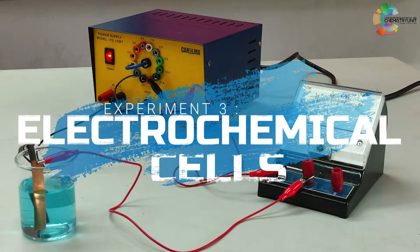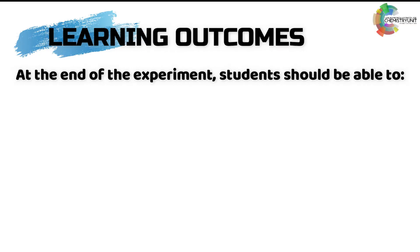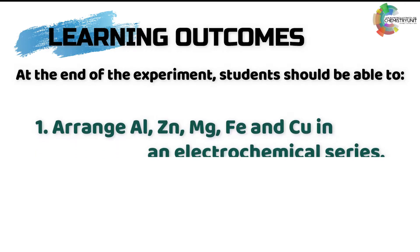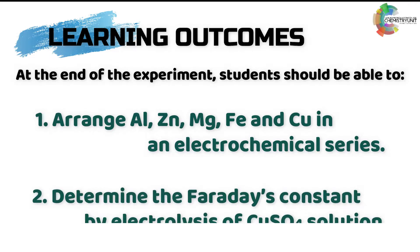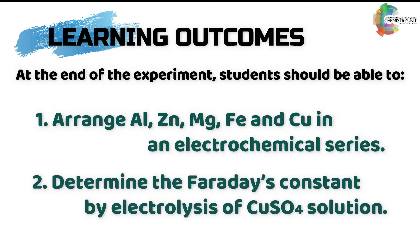This is Experiment 3: Electrochemical Cells. At the end of this experiment, students should be able to: one, arrange aluminium, zinc, magnesium, iron and copper in an electrochemical series; and two, determine the Faraday's constant by electrolysis of copper sulfate solution.